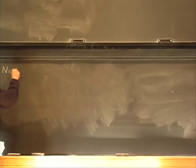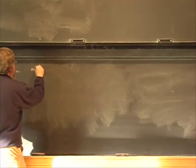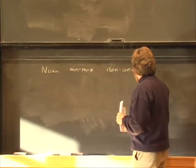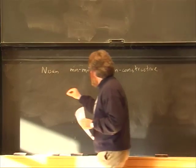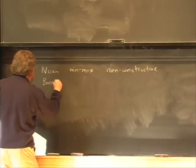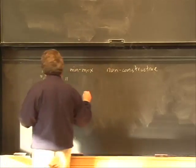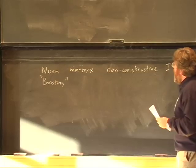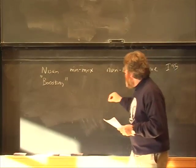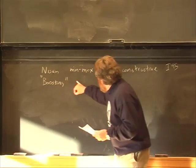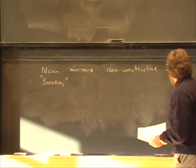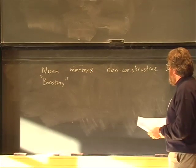There are actually two styles of proof for the hardcore set theorem. There's what's called the Nisan min-max style of proof, which is pretty much non-constructive. And there's the boosting style proof. The boosting style also appeared in my paper—Nisan didn't want to be a co-author.